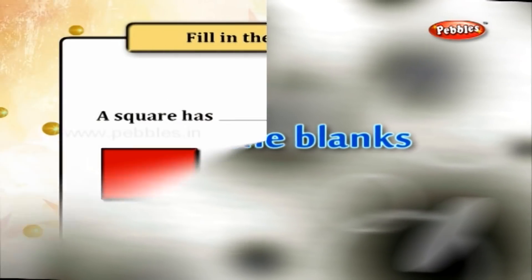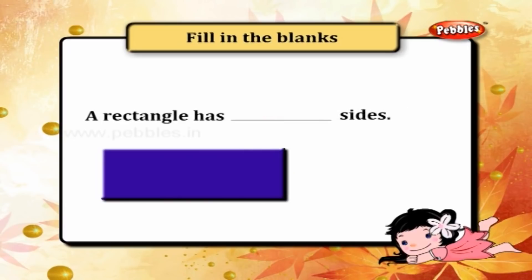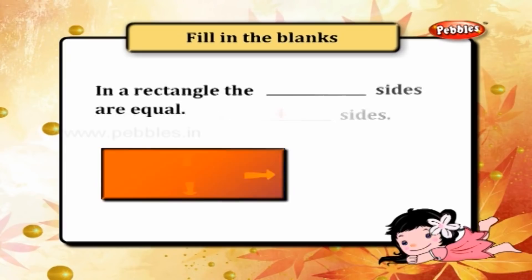Fill in the blanks. A rectangle has four equal sides. In a rectangle, the opposite sides are equal.